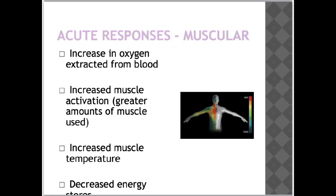Acute responses in the muscular system include increases in oxygen extracted from the blood, increased muscle activation, increased temperature, and decreased energy stores.